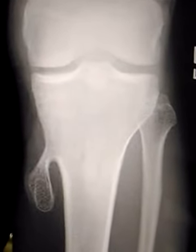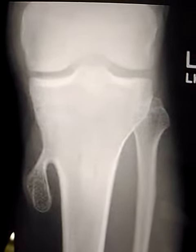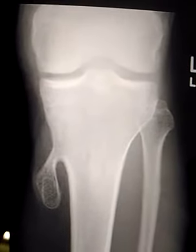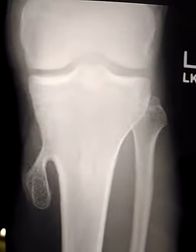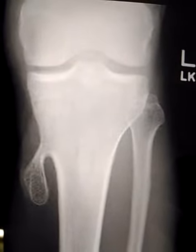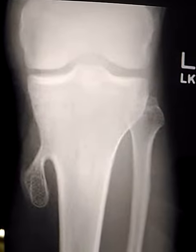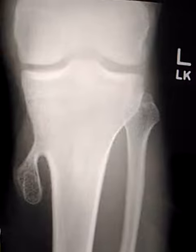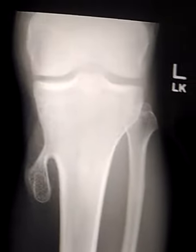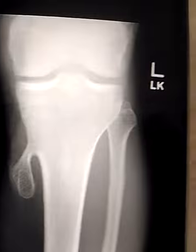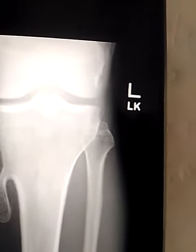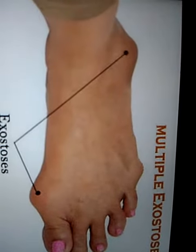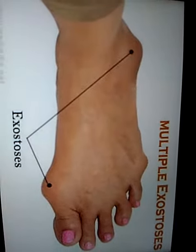Osteochondroma is usually a solitary lesion, but when it occurs in a multiple pattern it is called Massada syndrome. In Massada syndrome there is an increased risk of malignancy, which is not a risk factor in solitary osteochondroma.